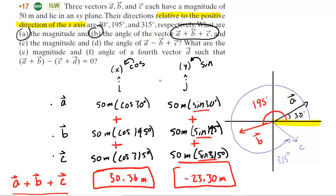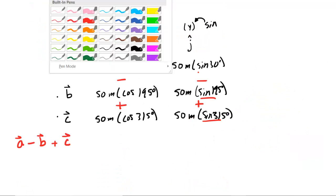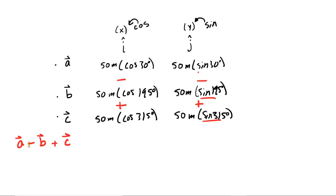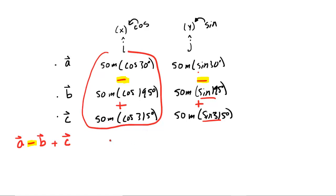Let's move on to parts C and D. This time we need A minus B plus C. The good news is we can use the same table — we just have to make one small adjustment, adding minus signs to indicate the subtraction. Pick up your calculators and run through the column: 50 cos 30 minus 50 cos 195 plus 50 cos 315. When you do that, you get about 127 meters. For the y-components, switch everything to sines, and you should get about 2.6 meters.